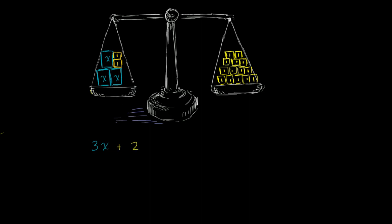Now let's think about what we have on the right hand side. We just have to count these: 1, 2, 3, 4, 5, 6, 7, 8, 9, 10, 11, 12, 13, 14. There are 14 blocks, each with a mass of 1 kilogram. So the total mass on the right side is 14 kilograms.